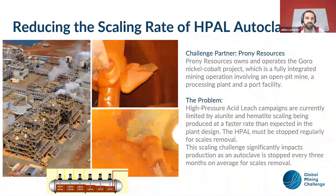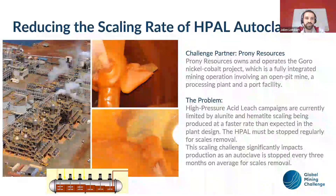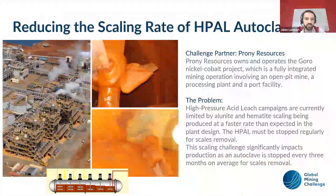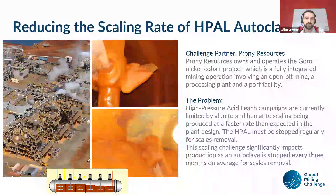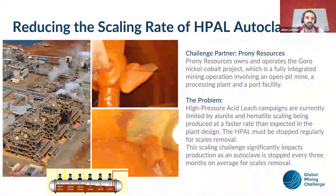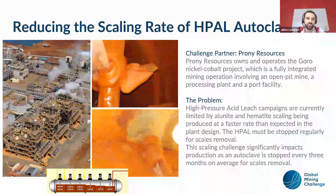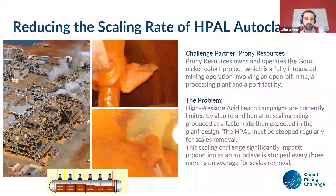When you have precipitation on the shaft and on the agitator, you decrease your efficiency of agitation, and when you precipitate on the walls you decrease the residence time in the autoclave and can create some plugging. We have six compartments in the autoclave and we go from one to another by overflowing, so if you have too much scale you can have plugging issues.